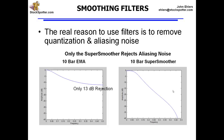Most traders use some kind of a moving average for filtering and smoothing — an exponential moving average or perhaps a simple moving average. They all behave similarly in that they are not very efficient filters. On a linear frequency scale, a 10-bar EMA set to a minus 3 dB critical frequency at 10 bars only has 13 dB of rejection at the Nyquist frequency. That's not much filtering at all.